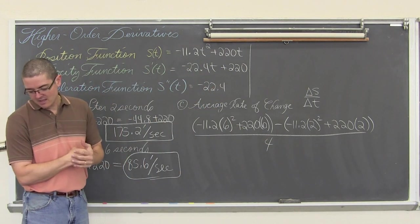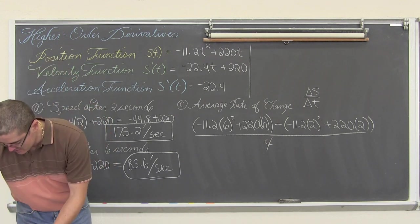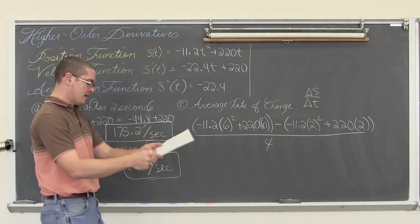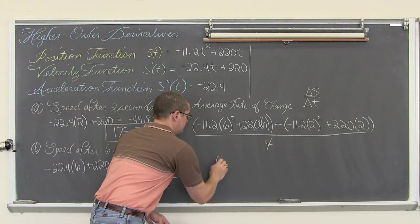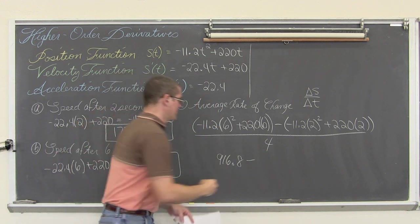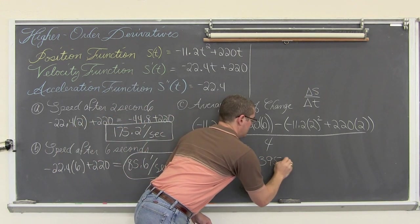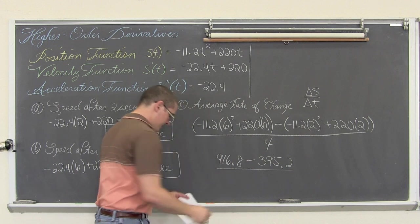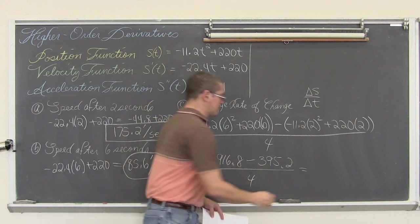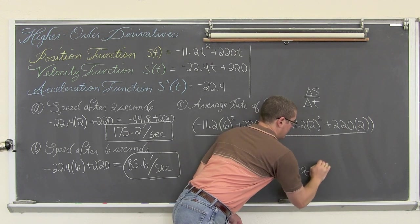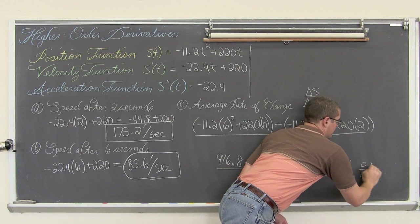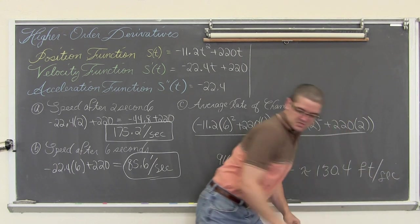Now I am not going to try and do that off the top of my head. I will just say that this comes out to be 916.8 minus 395.2 divided by 4 which comes out to be approximately 130.4 feet per second.